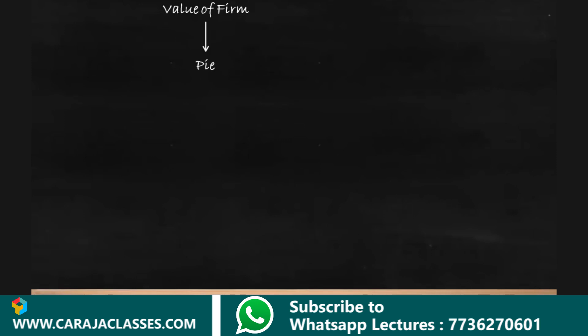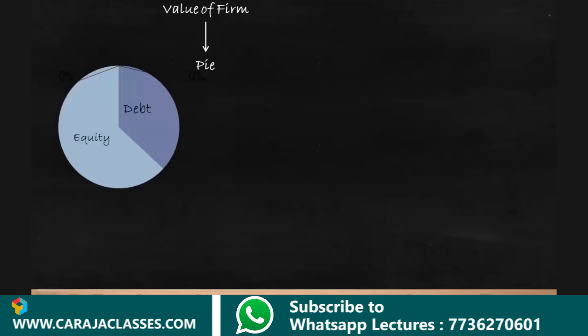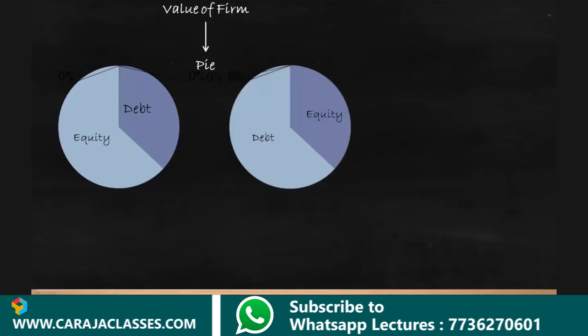Under the MM approach, the value of the firm is equated with a pie. The value of the firm is the pie, and it is not affected by the presence of debt or equity. In the second pie, the debt component is more and equity is less, whereas in the first pie, equity is more and debt is less. Whatever the composition of the pie, what matters is the value of the firm — the size of the pie — and it is not affected by the presence of debt or equity.